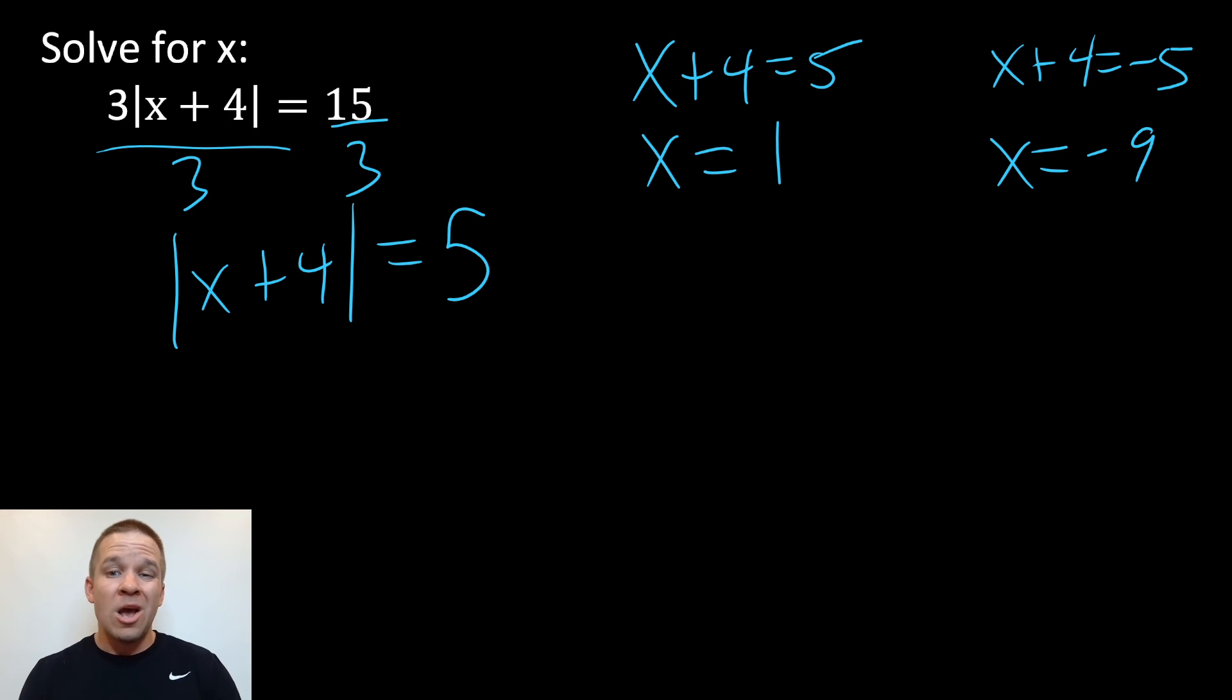Now, if I plug these in, well, if I plug one and I get one plus four is five, the absolute value of that is five times three is 15. Works out. If I plug in negative nine, I get negative nine plus four. That's negative five, but the absolute value of negative five is five times three gives me 15.